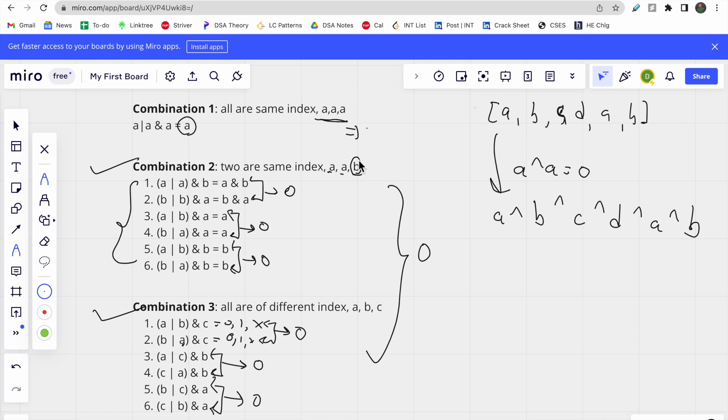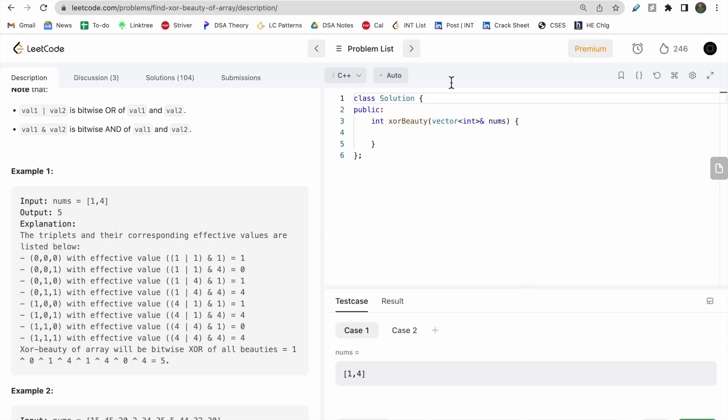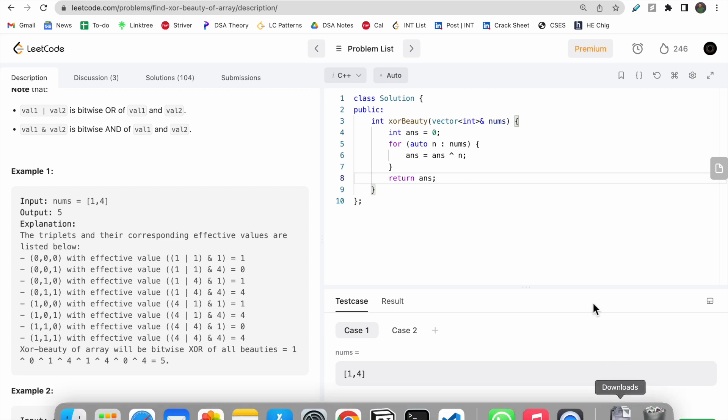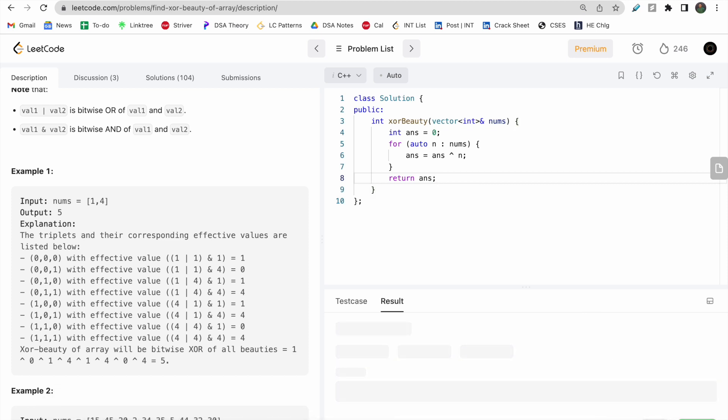Now let's move to the coding part. I'll initialize an answer variable to zero, then take the XOR of all integers from nums. The code is simple: answer equals answer XOR n for each element.